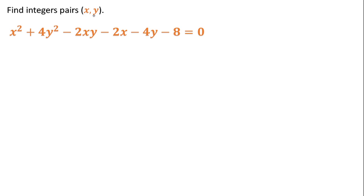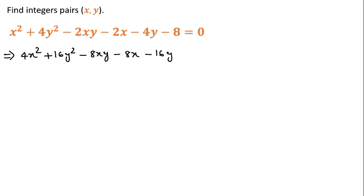For finding the value of xy, first I will multiply both sides by 4. Then we can write this equation as 4x² plus 16y² minus 8xy minus 8x minus 16y minus 32 equal to 0. We can write it like this, and I will write 4x² as x² plus 3x².